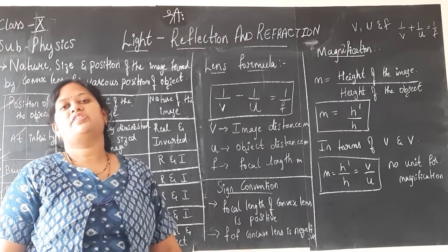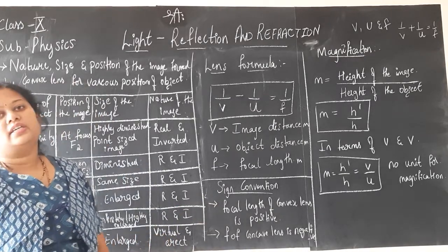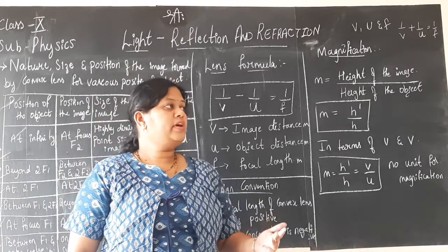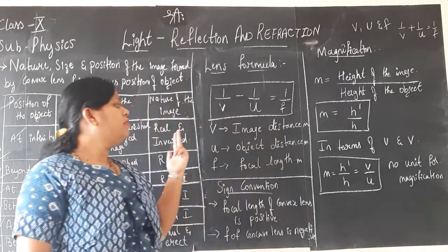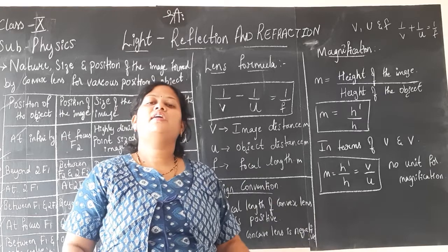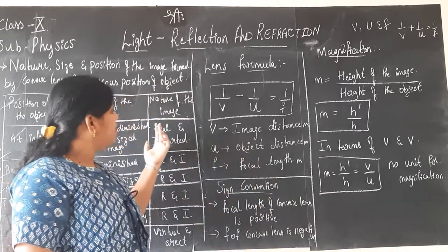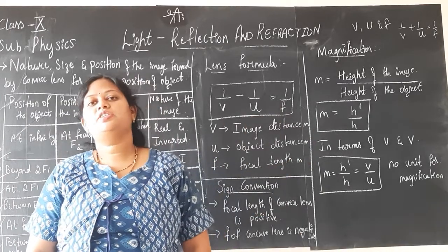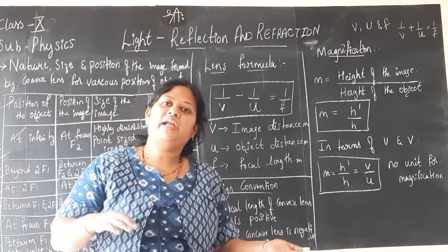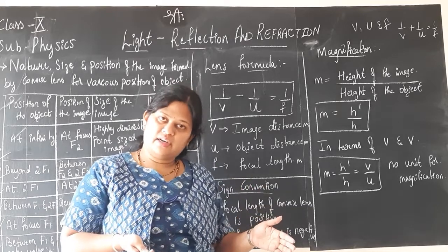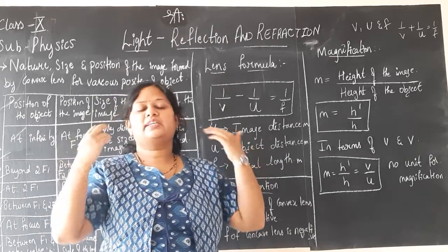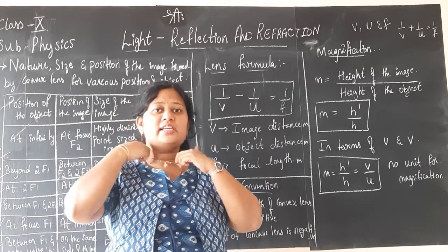With respect to the mirror, we studied the sign convention: objects are always placed on the left-hand side of the mirror. All distances measured towards the left-hand side are taken as negative, and towards the right-hand side are taken as positive. The same sign convention applies here for the lens as well.